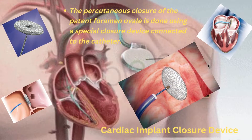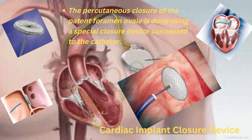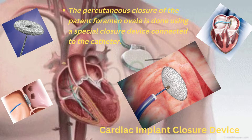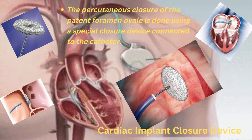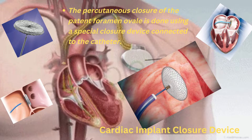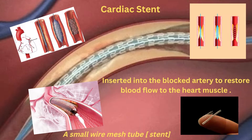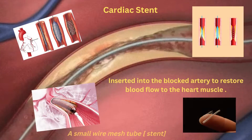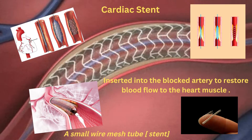Let's look at some cardiac cath lab procedures. The first is the cardiac implant closure device: the percutaneous closure of the patent foramen ovale — the opening between the heart chambers — is done using a special closure device connected to the catheter, as seen in the image. Another procedure is the cardiac stent — a small wire mesh tube that is inserted into the blocked artery to restore blood flow to the heart muscle, also visible in the images.